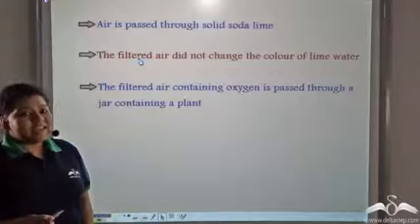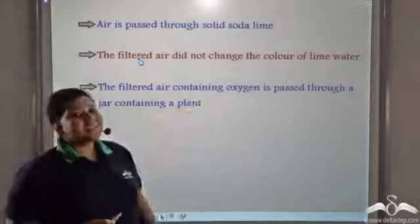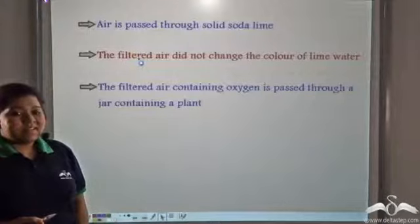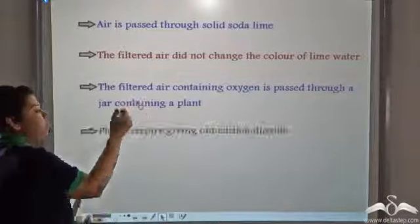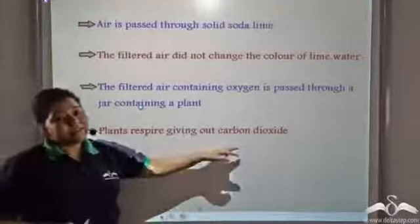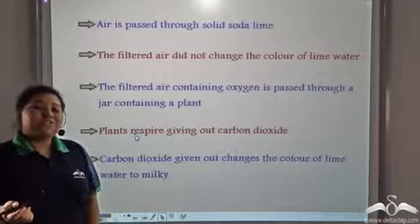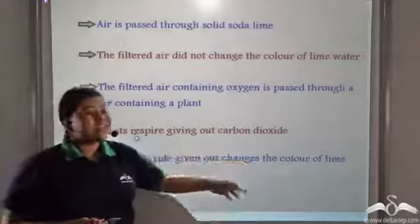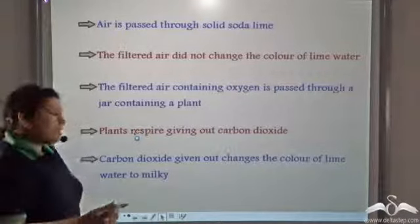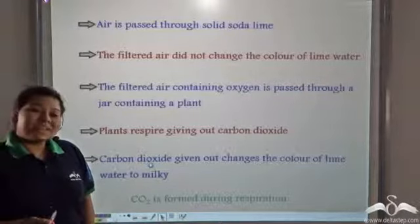Next, the filtered air that did not have carbon dioxide but had oxygen was passed through a bell jar containing a potted plant. With the help of the oxygen in the air, the plant respired, giving out carbon dioxide. The carbon dioxide given out by the plant does change the colour of lime water to milky. From this experiment, it is proved that carbon dioxide is formed during respiration.